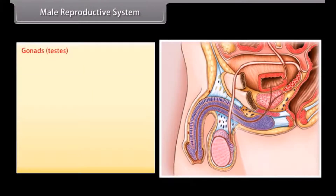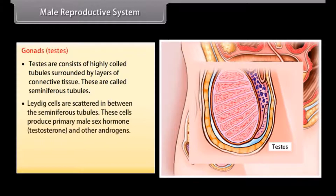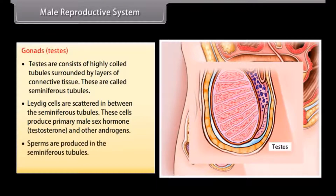The gonads in males are the testes. Testes consist of highly coiled tubules surrounded by layers of connective tissue, called seminiferous tubules. Leydig cells are scattered in between the seminiferous tubules. These cells produce the primary male sex hormone testosterone and other androgens. Sperms are produced in the seminiferous tubules.